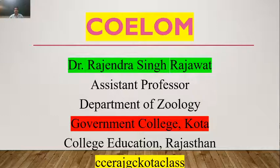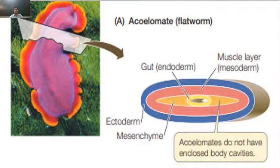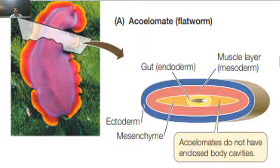In this video, we will talk about Praguha (coelom). Praguha is a body cavity which is formed from mesoderm. In animals where Praguha does not occur, the body cavity is absent.